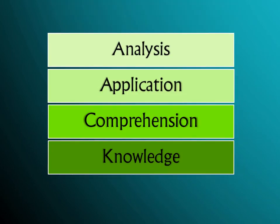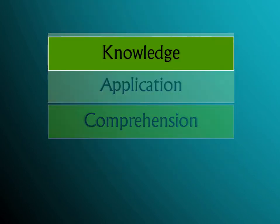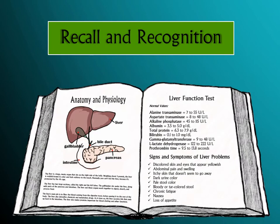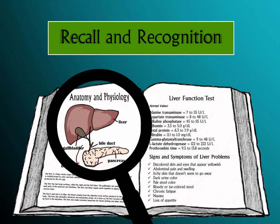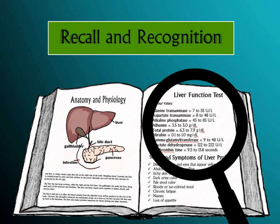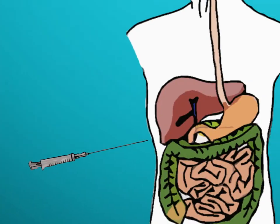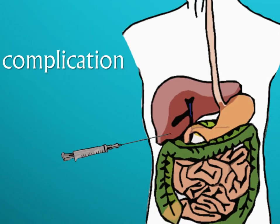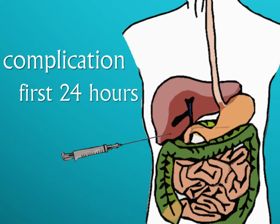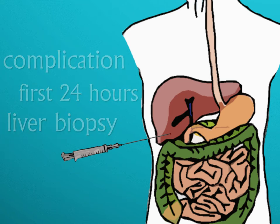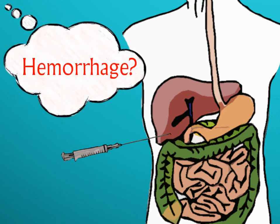At the very superficial level, we have knowledge or recall recognition level. At this level, you must demonstrate enough knowledge or factual information like anatomy and physiology, normal lab and vital sign values, and signs and symptoms. For example, if you were asked to identify a complication that you can anticipate during the first 24 hours after percutaneous liver biopsy, could you identify hemorrhage as the potential complication?